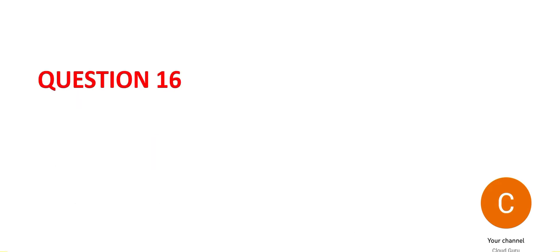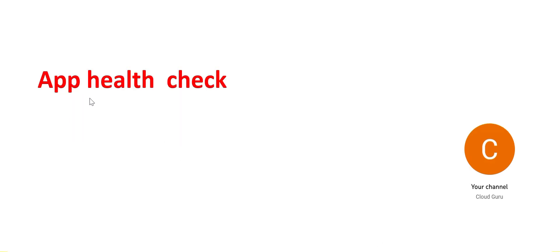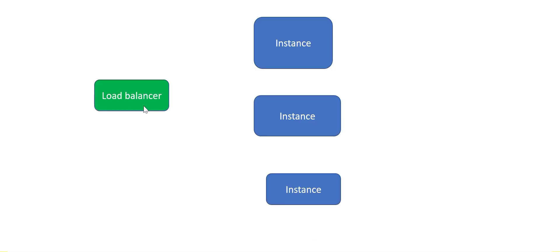Let's look at question 16. In short, the question is asking you to do an app health check. Option A talks about a load balancer health probe — we want to do a health check on the app, not the load balancer. What a load balancer health probe does is ensure that requests are routed to healthy instances. The load balancer sits in front of instances and checks which ones are healthy.